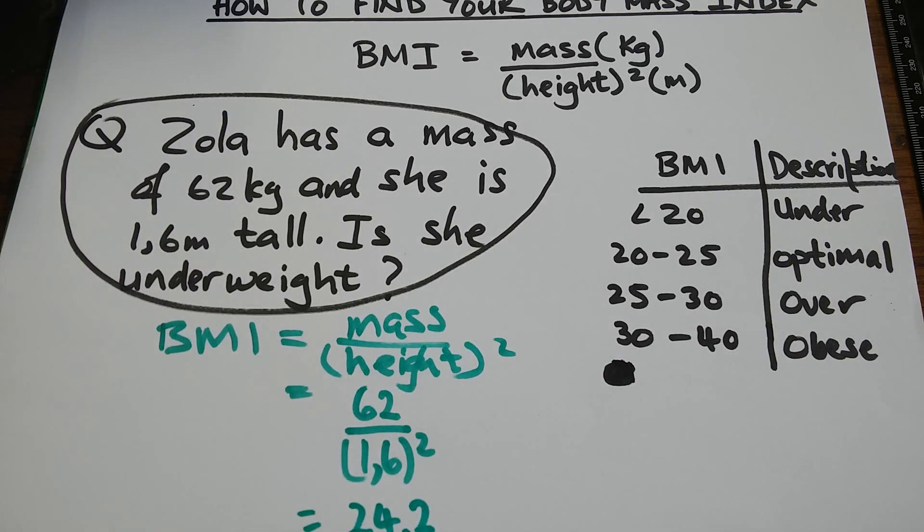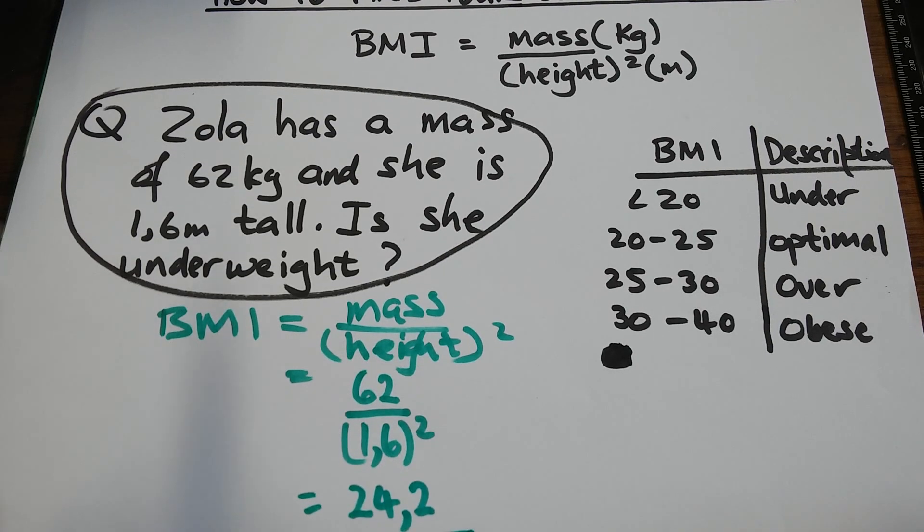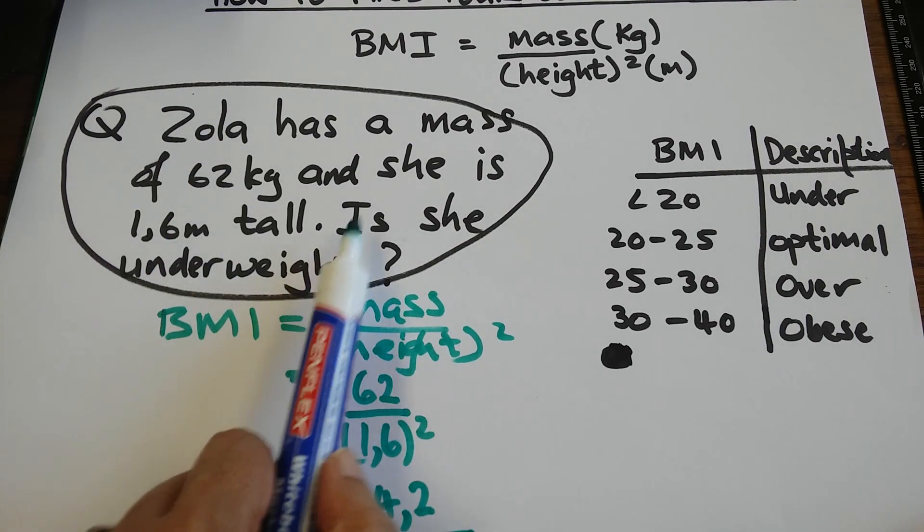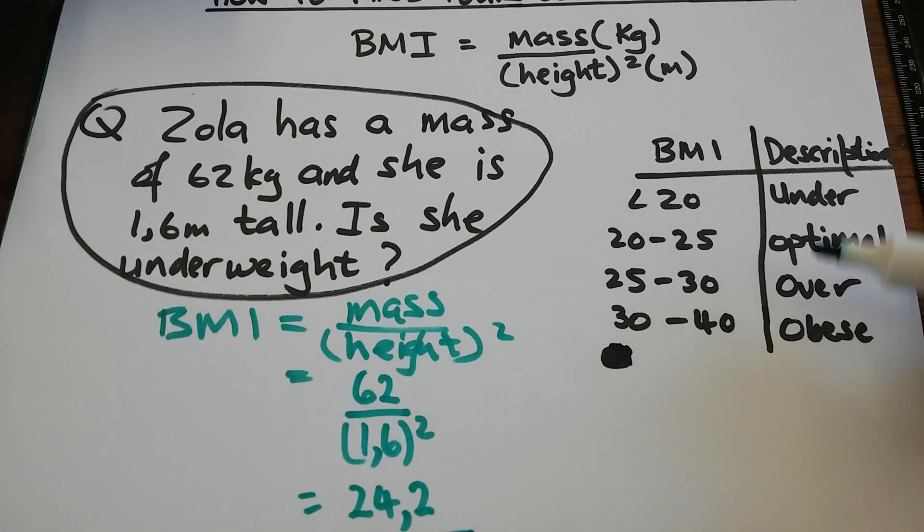So, Zola's BMI is now 24,2. So, to answer the question, is she underweight? I go to my table.